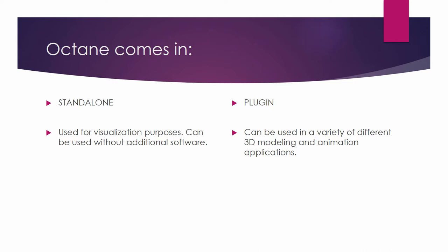Octane comes in two different formats: there's the standalone and the plugin. The standalone is used for visualization purposes and can be used without additional software. The plugin can be used in a variety of different 3D modeling and animation applications, but it's not a standalone option — you actually have to own the standalone before you can use the plugin. If you're using Cinema 4D, for example, the plugin allows Cinema 4D to cross-talk to Octane as a standalone. So in order to have the plugin, you need the standalone, but you don't need the plugin to use the standalone.